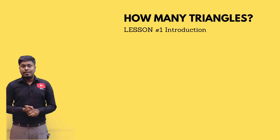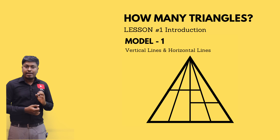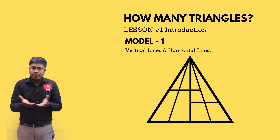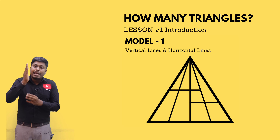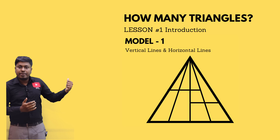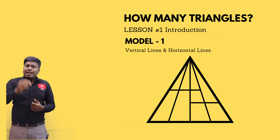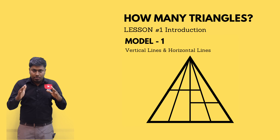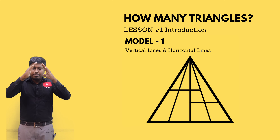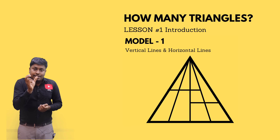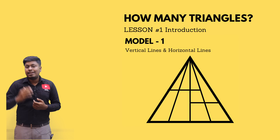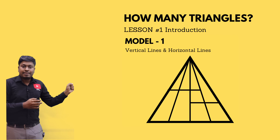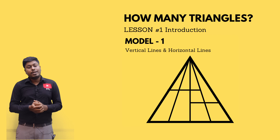Model number one: in this model you can see one large triangle. Inside that triangle there are multiple vertical lines and one or two horizontal lines. So if you see a question like this in your exams — a huge triangle with multiple vertical lines and one or two horizontal lines inside — it is called model number one.